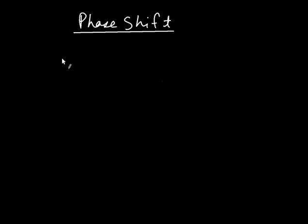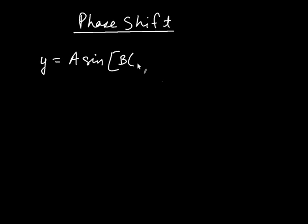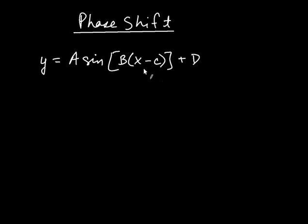Here we're going to discuss what's called the phase shift for trig functions. The first thing we're going to do is look at the sine function in standard form. Y is equal to A multiplied by sine of B multiplied by X minus C, plus D. We want to write trig functions with the argument factored so that we have B multiplied by X plus or minus something.